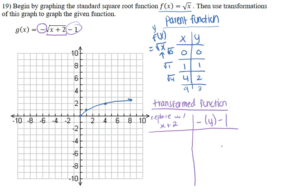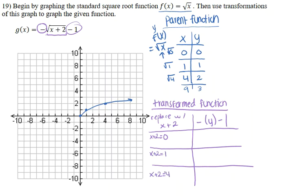For the x values, we set x+2 equal to each parent function x value: x+2 = 0, x+2 = 1, and x+2 = 4. Subtracting 2 from both sides gives x = -2, x = -1, and x = 2.